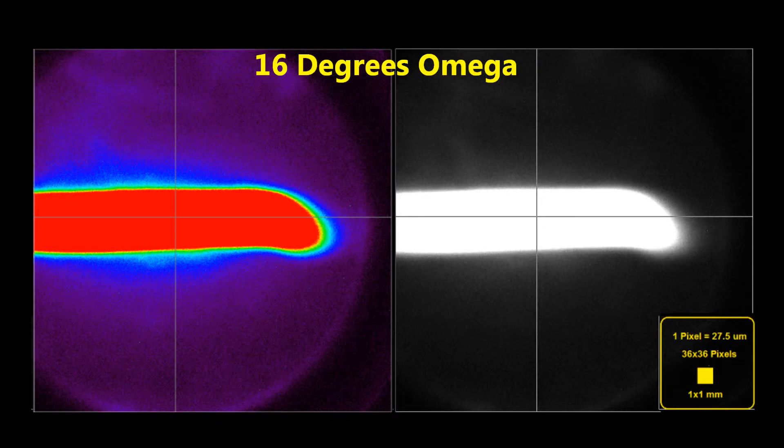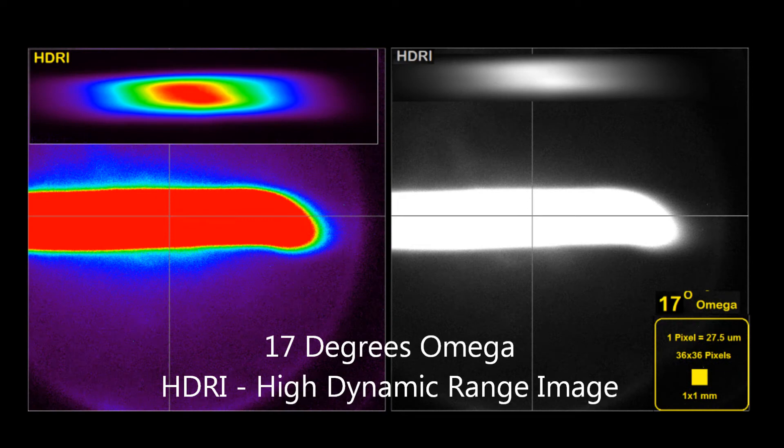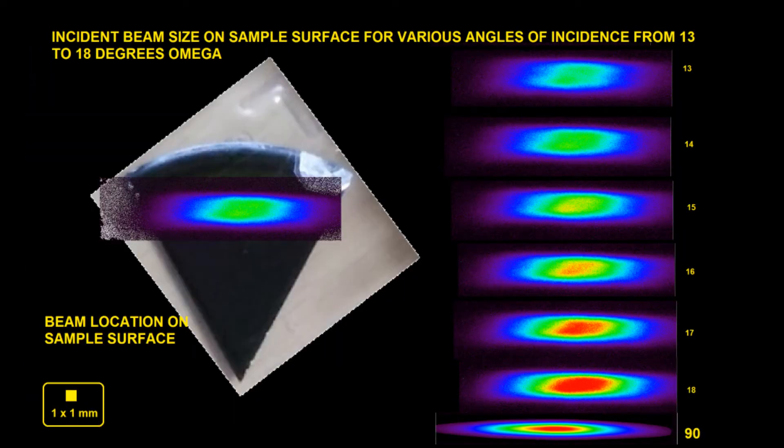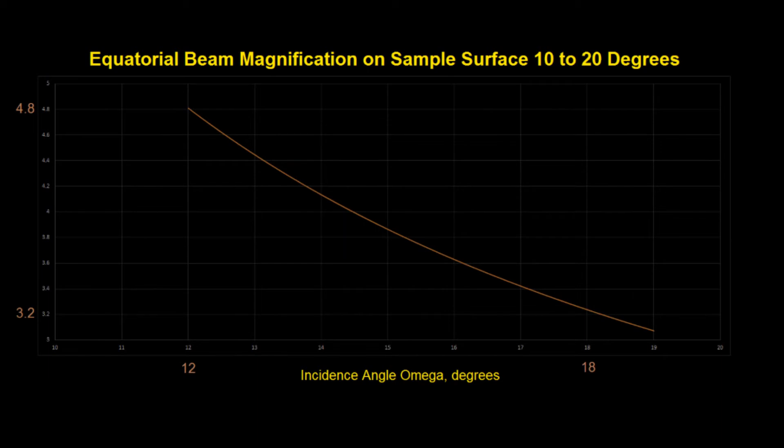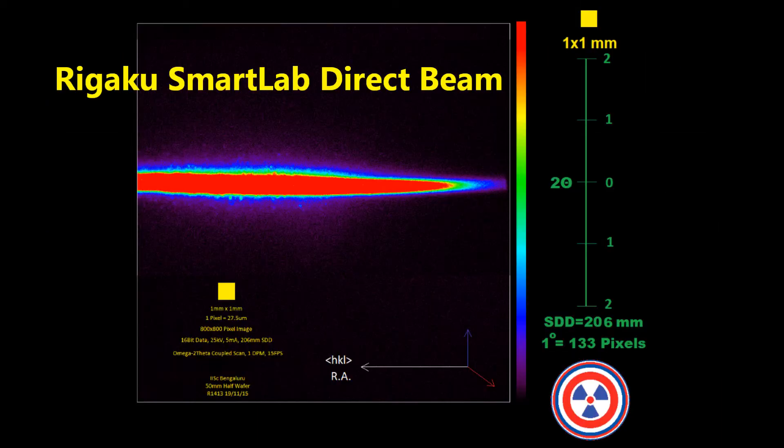A quick review of the three-dimensional dataset collected for this rocking curve shows an abundance of character that would not be possible to observe, record, and quantify using the conventional 0-D XRD rocking curve method.